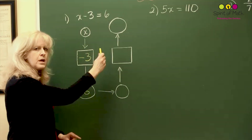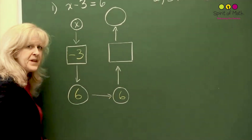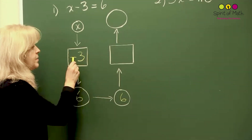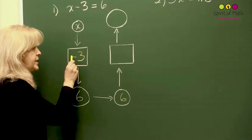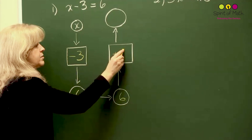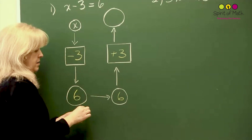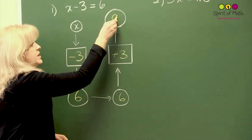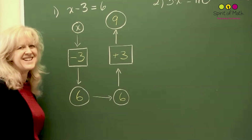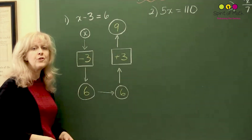Now we're going to go backwards to figure out what x is. You start with the 6, and then you do the opposite of what the box said — the opposite operation. It says minus 3 or subtract 3, so instead of subtract 3, you add 3. So what you've got is 6 plus 3, which equals 9 — that's your answer. Quick double check: 9 minus 3 is 6. You could have probably done that in your head, but this is just to give you an example of how a flow chart works.